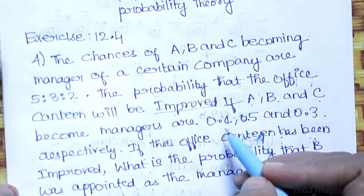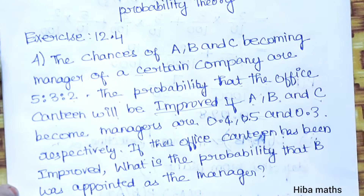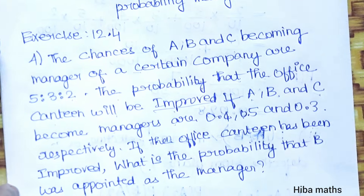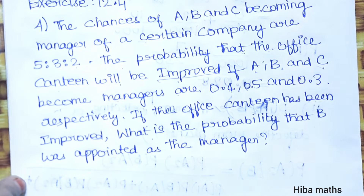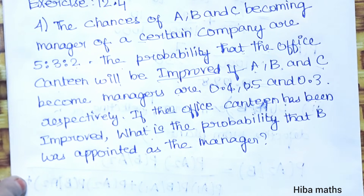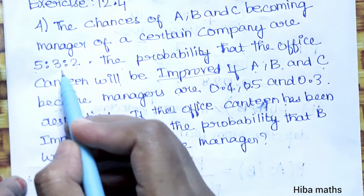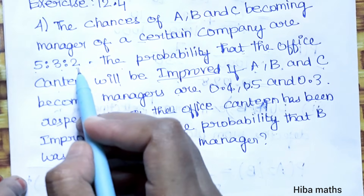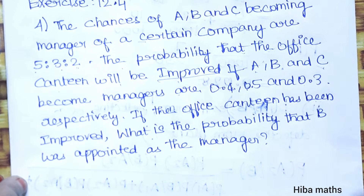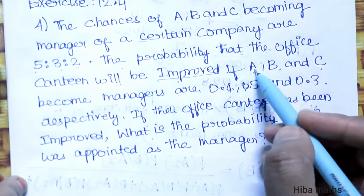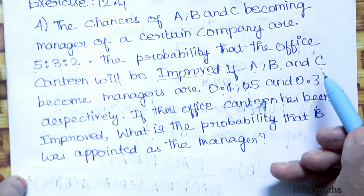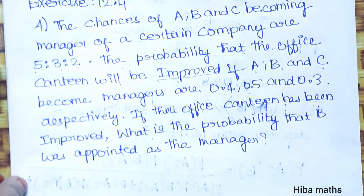...are 0.4, 0.5, and 0.3 respectively. So the company has three candidates A, B, C. If A becomes manager the canteen improves with probability 0.4, if B becomes manager with probability 0.5, and if C becomes manager with probability 0.3.